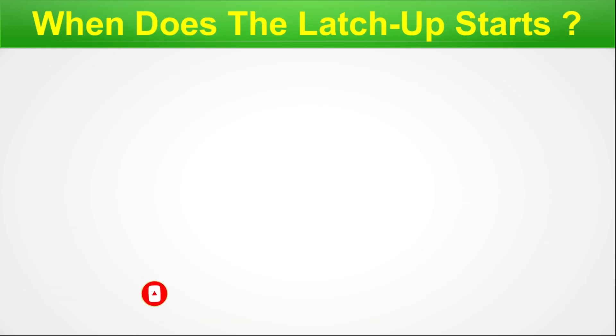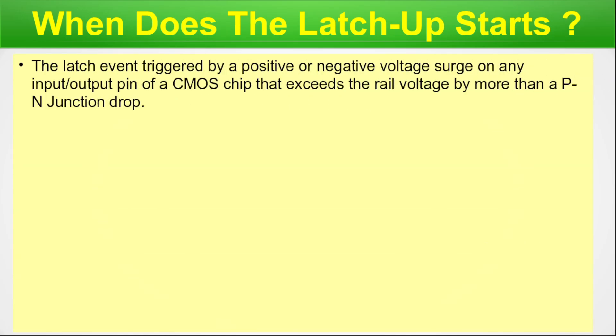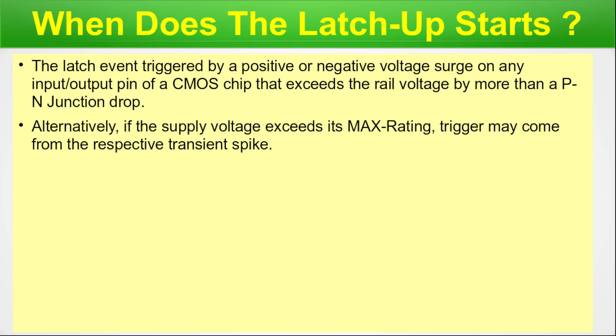When does latch-up start? A latch-up event is triggered by a positive or negative voltage surge on any input or output pin in a CMOS chip that exceeds the rail voltage by more than a PN junction drop — acting like a gate signal to the SCR structure. Alternatively, if the supply voltage exceeds its maximum rating, a trigger may come from a transient spike. Additionally, if the difference between VDD and VSS is large enough due to constant voltage stress over time, avalanche breakdown of the well-substrate junction can occur.